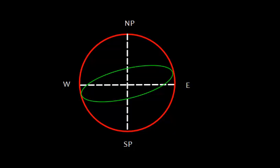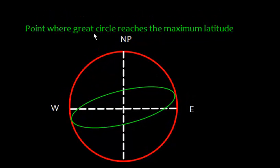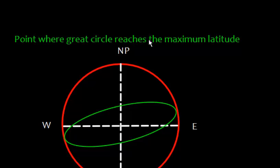We can define a great circle as a circle which has the same center as the center of the sphere. As we saw, the great circle reaches a maximum point and thereafter the latitude is decreasing. So the point where the great circle reaches the maximum latitude is called the vertex.